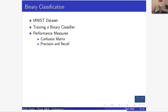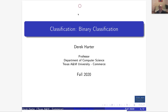Everything discussed here is still valid when you have more than two classes — it just becomes more complex. For 10 digit classes, the confusion matrix would be 10x10, where the diagonal gives correct predictions and off-diagonals show incorrect ones, like predicting five when it was really three. That's it for this video. In the next video we'll extend binary classification to multi-class classification tasks.